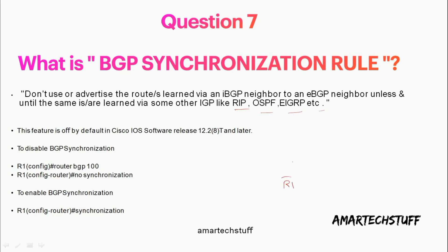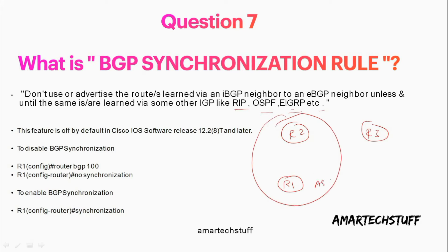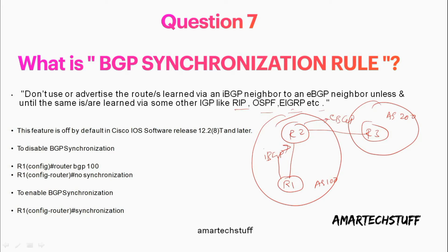So let's consider we have router 1, router 2, and router 3. Router 1 and router 2 belong to one single AS — let's say AS 100 — and router 3 belongs to a different AS, let's say AS 200. This is an IBGP neighborhood because they belong to the same AS; this is an EBGP neighborhood because they belong to different ASes. So whatever routes R1 gives to R2, R2 is not going to use or advertise them — meaning it will not install them in the routing table and will not advertise to its EBGP neighbor.